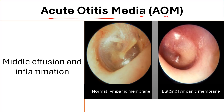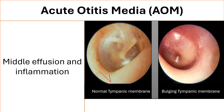Acute otitis media means middle ear effusion and inflammation. This is the normal appearance of the tympanic membrane. The tympanic membrane normally is concave towards the middle ear, and it is easy to see the handle of the malleus, and you will also be able to see the cone of light.